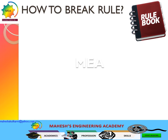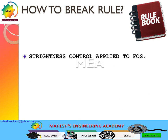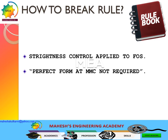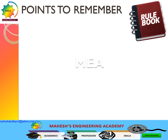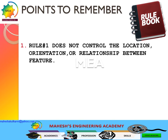How to break these rules: there are two ways to override Rule Number One. The first is by applying a straightness control to the feature of size, in which case Rule Number One does not apply. The second is by specifying a note in the drawing stating 'perfect form at MMC not required.' These two cases allow us to override Rule Number One.